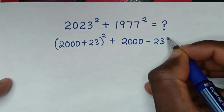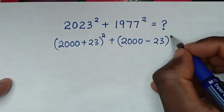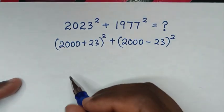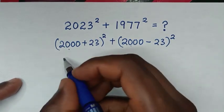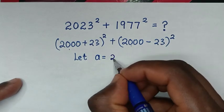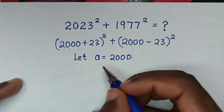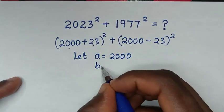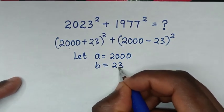2000, and also 23 is common, so we let b equal 23.